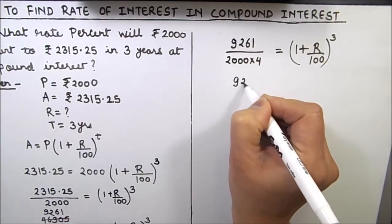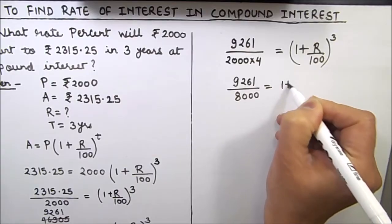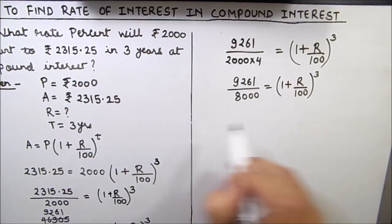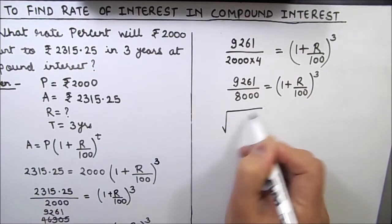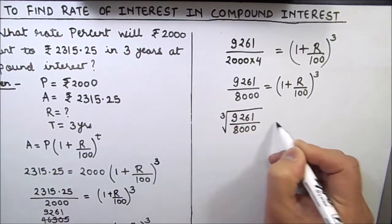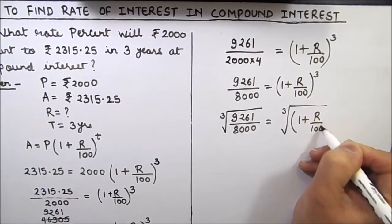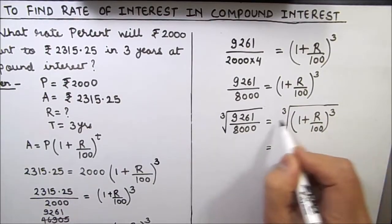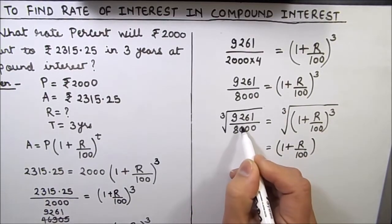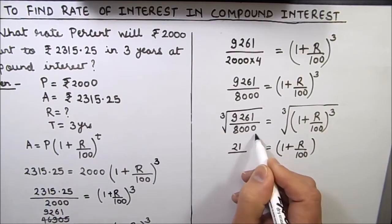So 9261 divided by 8000 is equal to 1 plus r over 100, raised to power 3. To remove this cube, we take the cube root on both sides. The cube root of 9261 divided by 8000 equals the cube root of 1 plus r divided by 100, cubed. The cube root and cube cancel, leaving 1 plus r divided by 100 on the right. Using a calculator, cube root of 9261 is 21 and cube root of 8000 is 20.